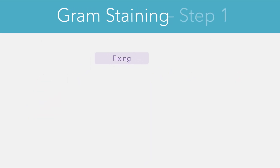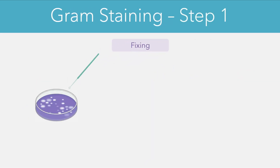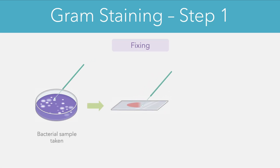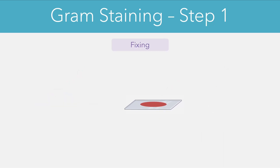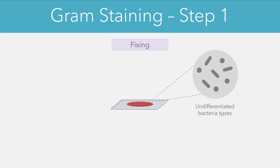Starting with fixing — this is basically a preliminary step where we take a sample of the bacteria from a petri dish and then apply the sample onto a glass slide so it can be viewed under a microscope. We also apply some heat which helps to fix the bacteria to the slide. If we were to take a look at the sample under a microscope at this point, we would see multiple undifferentiated bacterial cells. The remainder of the gram staining process basically involves adding different reagents to distinguish between the different types of bacteria.